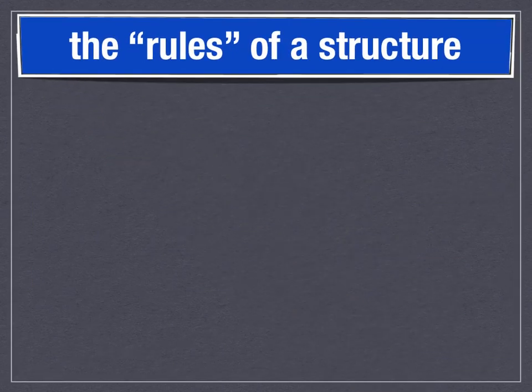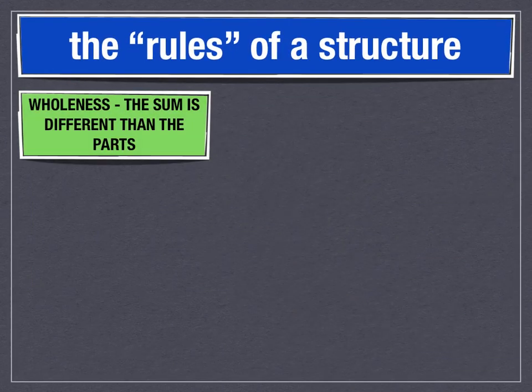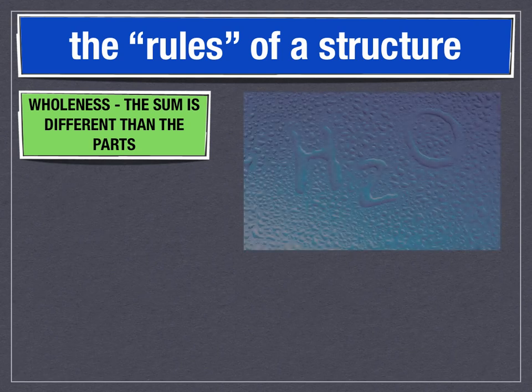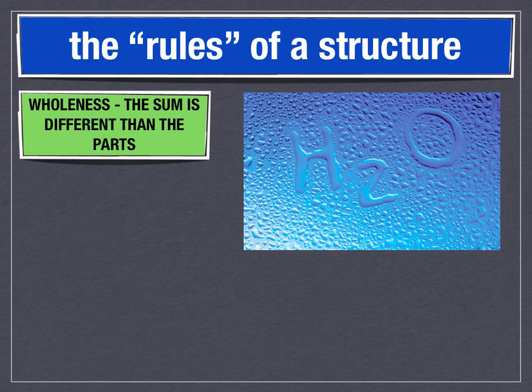Structures have rules. For example, rule number one: wholeness — the sum is different than the parts. This is true of a water molecule. Hydrogen atoms are one thing, an oxygen atom is something else; you put them together in the right configuration and what you have is different from either of them. It's something new — I'd even say greater than the sum of its parts.